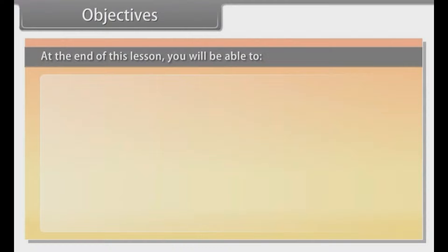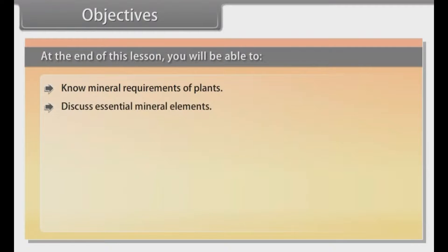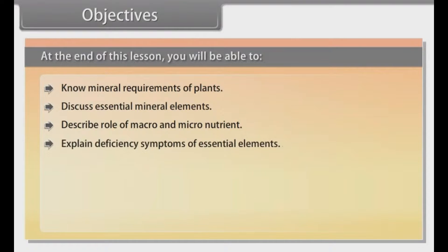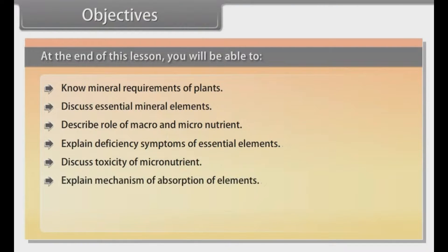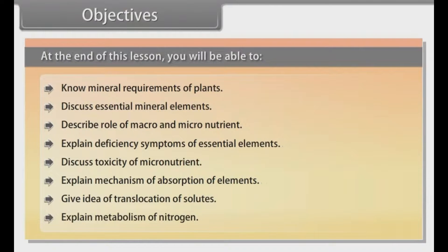At the end of this lesson, you will be able to: know mineral requirements of plants; discuss essential mineral elements; describe the role of macro and micronutrients; explain deficiency symptoms and essential elements; discuss toxicity of micronutrients; explain the mechanism of absorption of elements; give an idea of translocation of solutes; and explain metabolism of nitrogen.